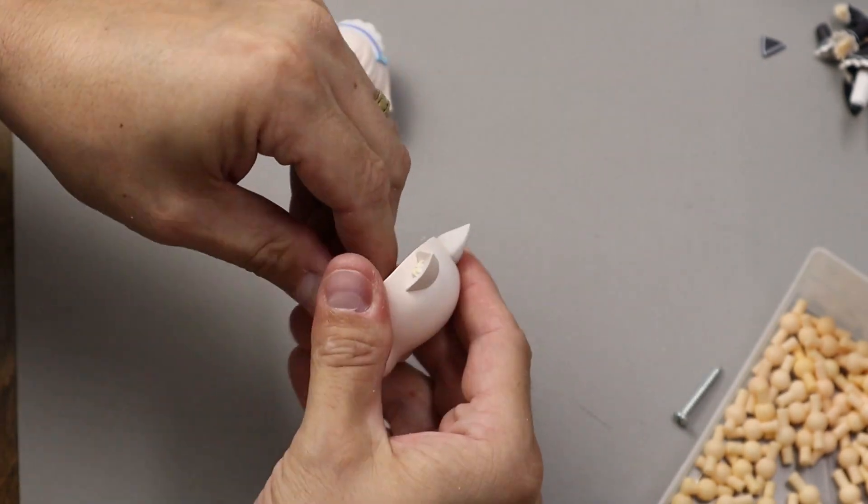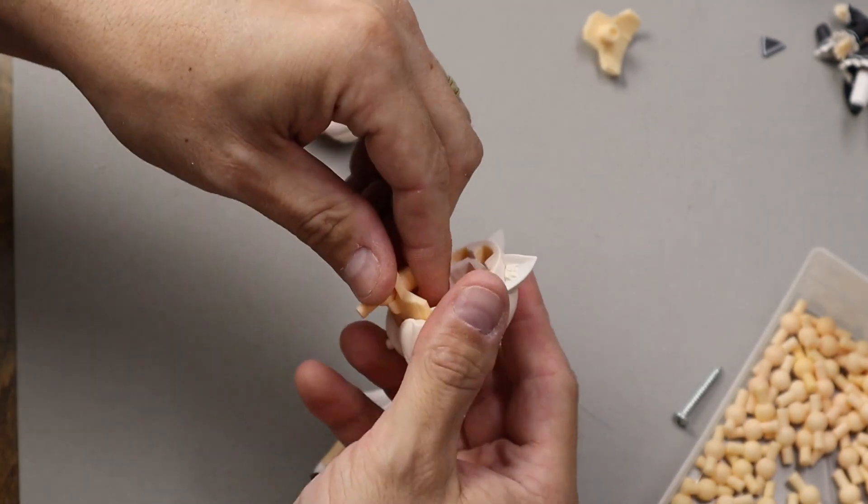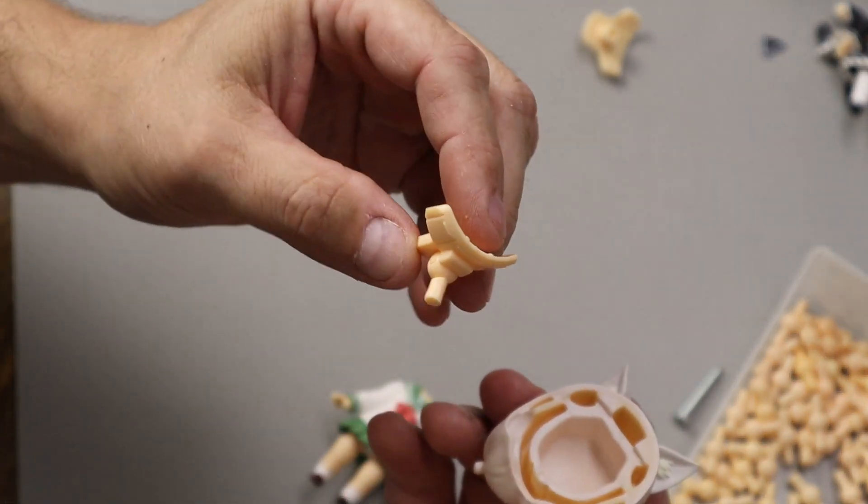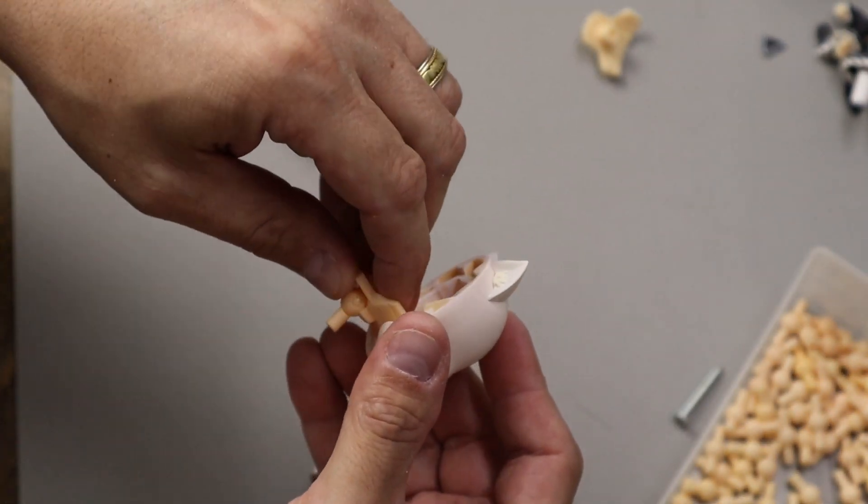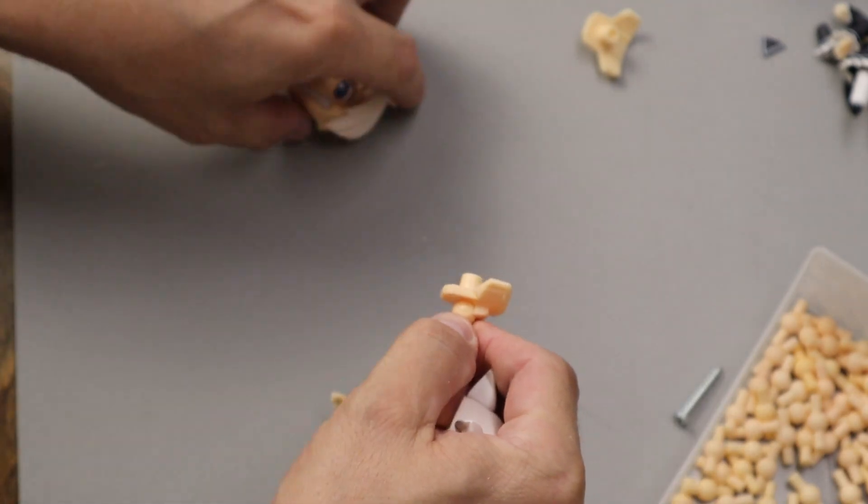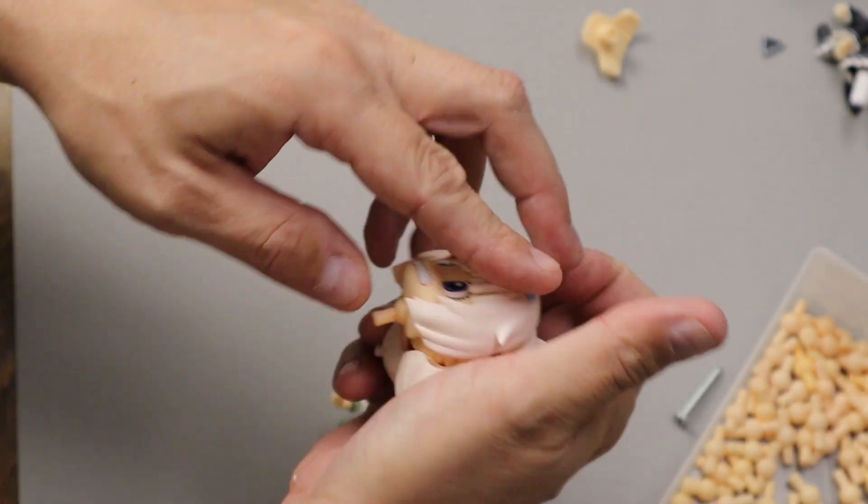So then out with the old and in the new, as they say, remove the old neck joint coupler. If this is an older Nendoroid, you may have to repeat this process to remove the peg from the faceplate too. This process is pretty much the same.